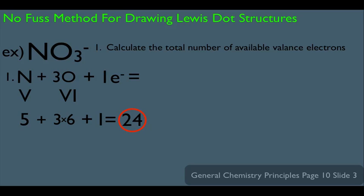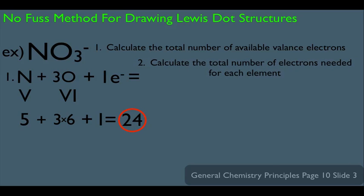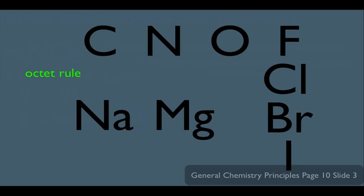That's step one — let's hold on to that number and move to step two: calculate the total number of electrons needed for each element. How do we know the needed electrons for these atoms? Remember the octet rule.